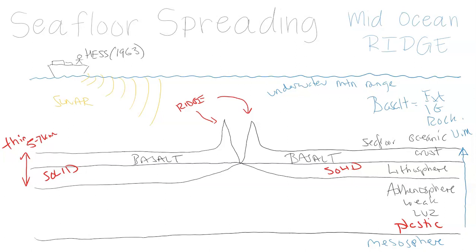Since this basalt comes from lava, somewhere along the ocean floor there must be a location where the crust is fractured, broken, split — where there's a gap and lava flows up. So there must be an underwater volcano, and Hess found it at this ridge location. He found the underwater volcano range and found that lava was coming up in between the ridge — very mafic, very runny, hot lava that came out in pillow formations.